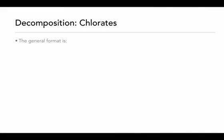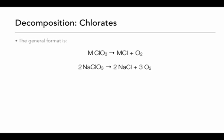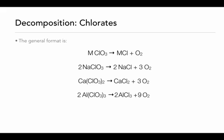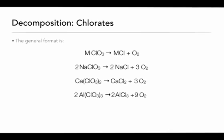The decomposition of metal chlorates is our last type of decomposition reaction. A metal chlorate will decompose into a metal chloride and oxygen gas. Sodium chlorate decomposes into sodium chloride and oxygen gas — balanced as two molecules of sodium chlorate giving two molecules of sodium chloride and three oxygen molecules. Calcium chlorate decomposes into calcium chloride and oxygen gas, balanced to produce three molecules of oxygen gas. Aluminum chlorate decomposes into aluminum chloride and oxygen gas — it requires two aluminum chlorates producing two aluminum chlorides and nine oxygen molecules. The only extra step is to make sure you've balanced the equation.